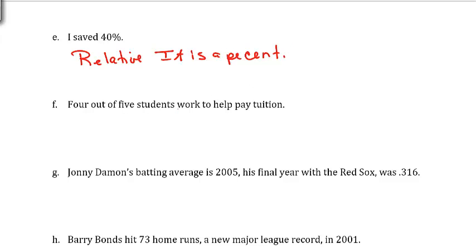Four out of five students work to help pay tuition. So it's saying how many out of the total. And so this is relative. So that's the same as four-fifths.